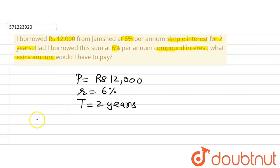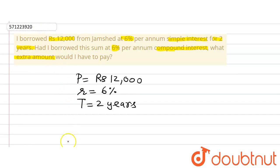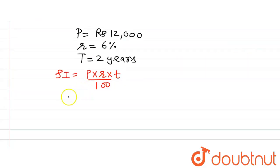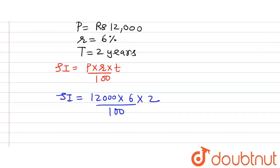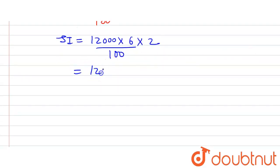Now we will find out the simple interest. The formula is: SI = (Principal × Rate × Time) / 100. Putting in the values: SI = (12,000 × 6 × 2) / 100. On simplifying, we get 120 × 12, which equals 1,440. This is the simple interest.